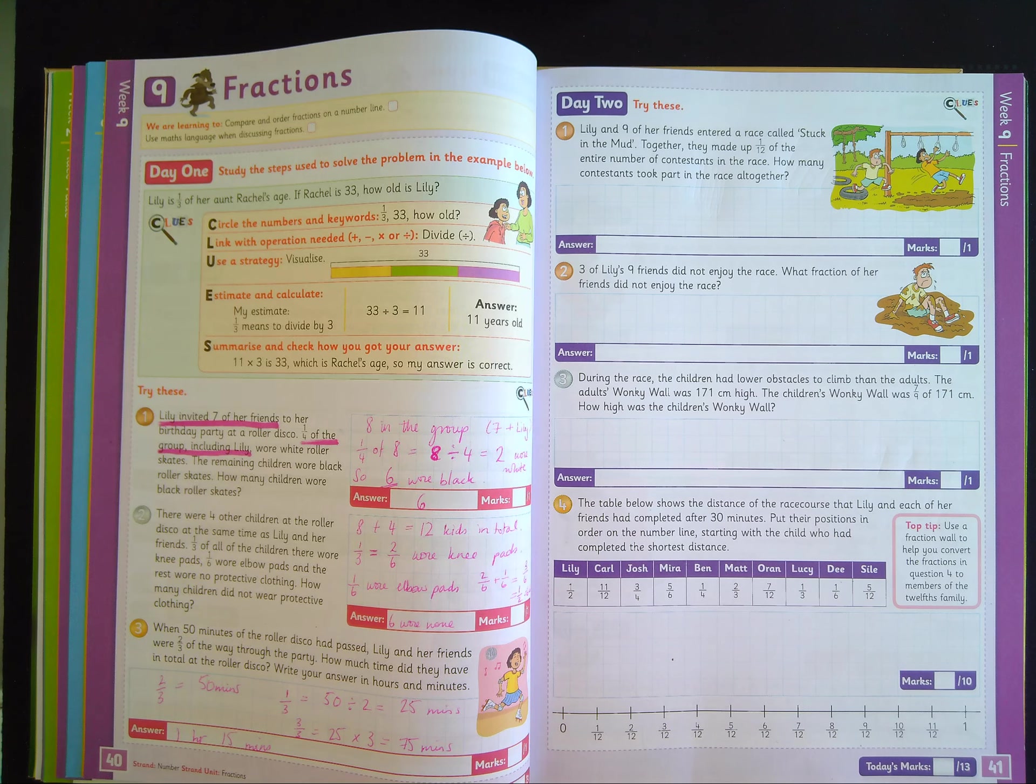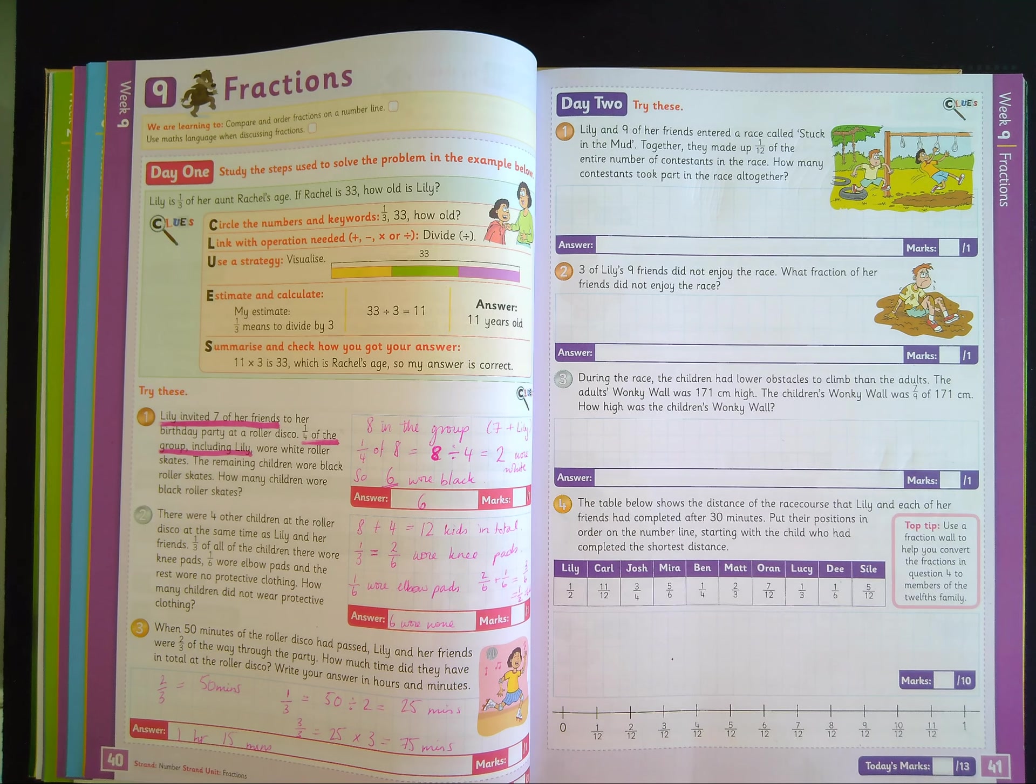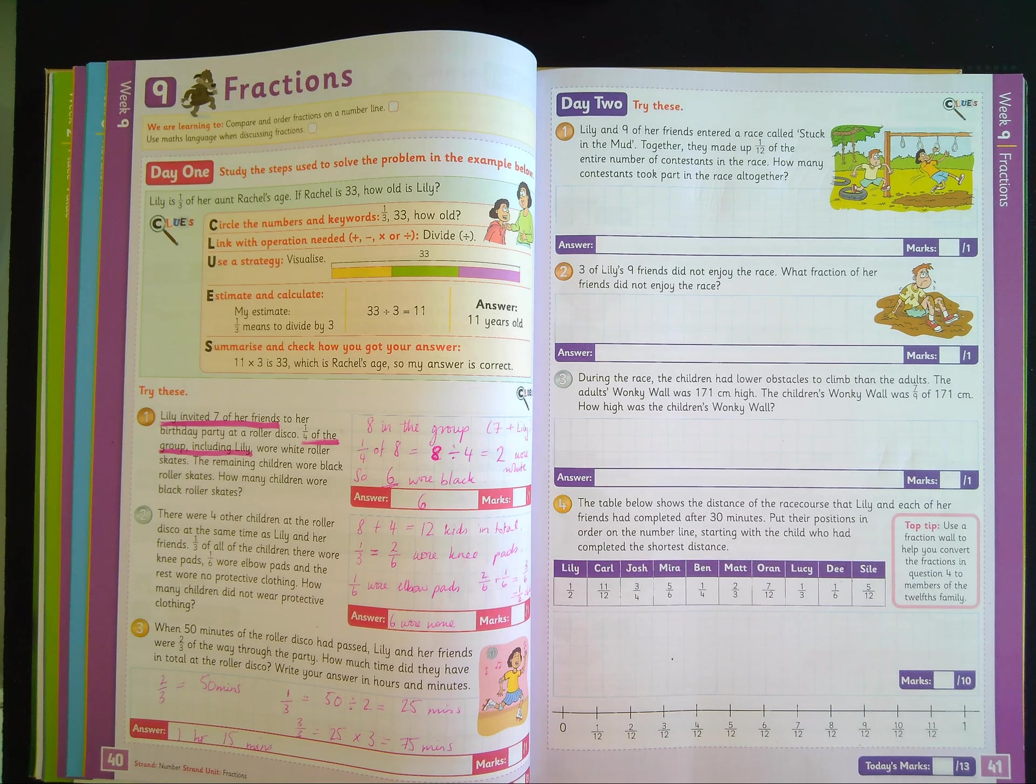In number one, you are told that Lily and nine of her friends, don't forget to include Lily, make up one-twelfth of the entire number of contestants in the race. So you know that one-twelfth of the entire contestants in the race is ten because Lily and her nine friends all together make ten. So if one-twelfth is equal to ten, what are twelve-twelfths equal to?